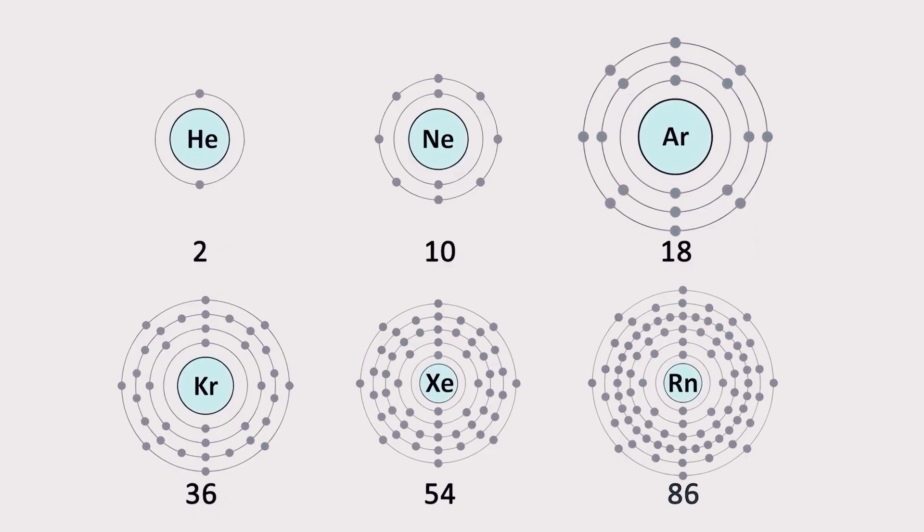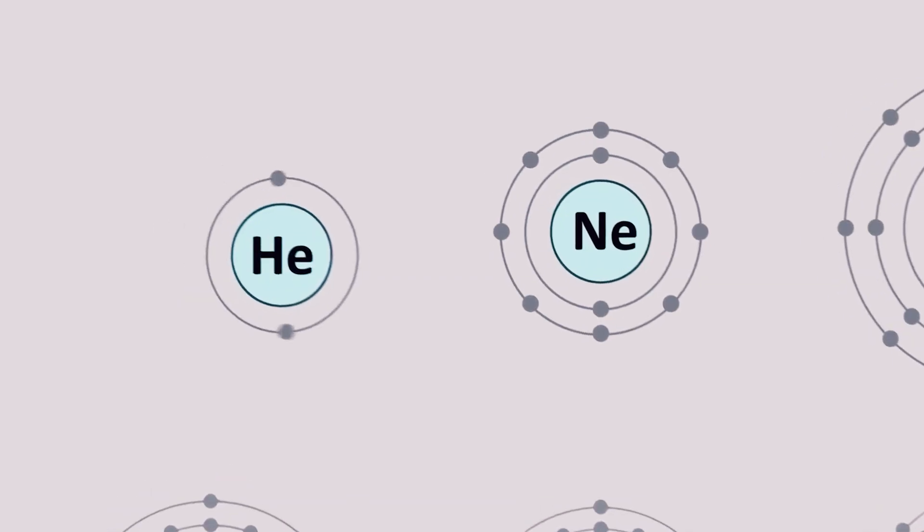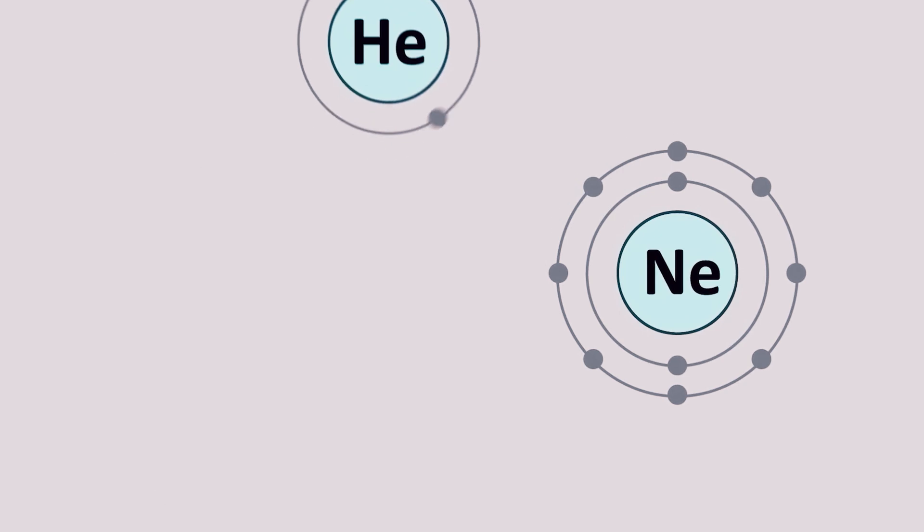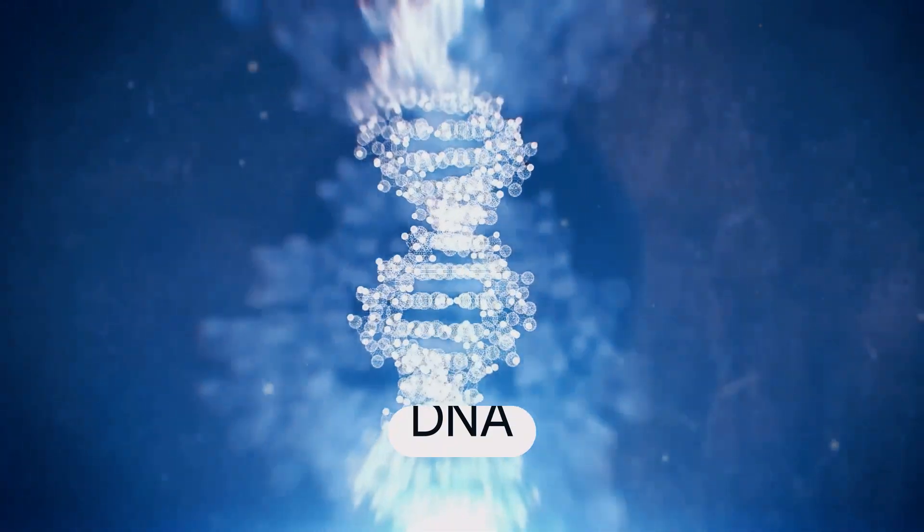Furthermore, carbon is able to form stable covalent bonds with other carbon atoms, allowing it to create long chains and branching structures. This means that it can form the backbone of large, complex molecules like DNA, which carries genetic information in all living organisms.